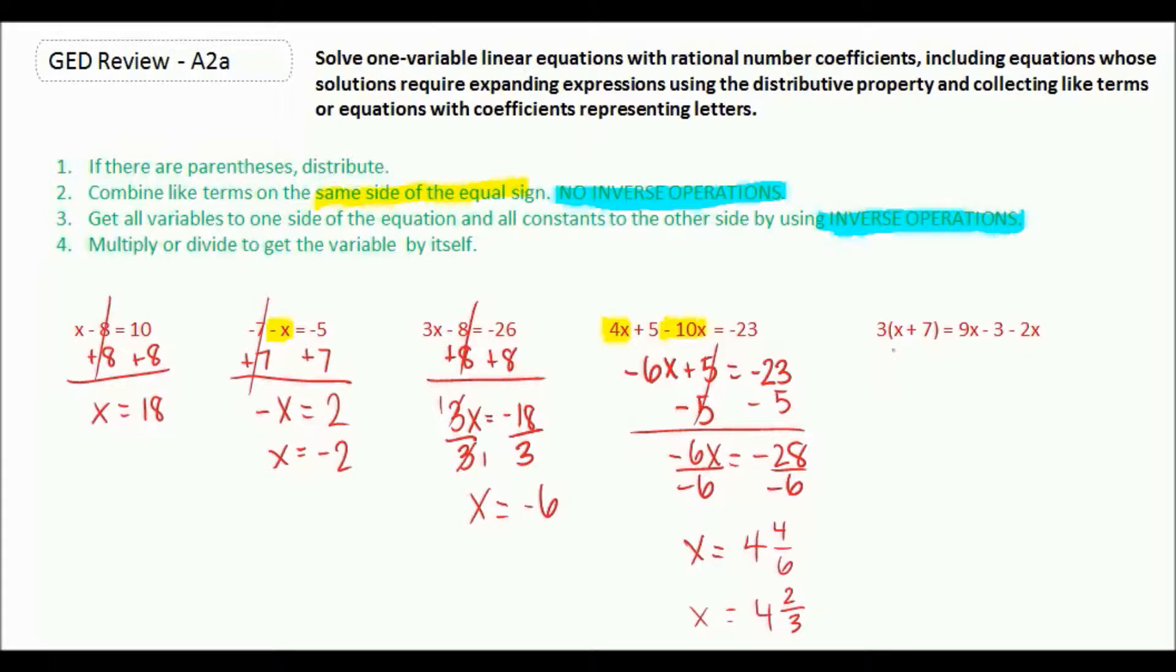And in our last example on the page, we need to simplify both sides of our equation. Over here, we need to distribute. And on the right-hand side, we need to combine like terms. So 3 times x is 3x. 3 times 7 is 21. On the other side, 9x minus 2x is 7x, and we have our minus 3.